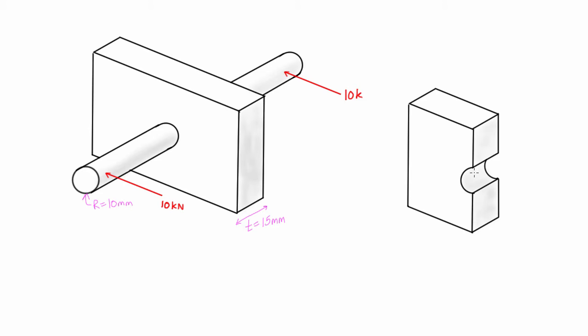So what we do in practice is we typically just assume that the entire force is being transmitted onto a rectangular projection of the rod onto the block. So in this case we would have 20 kilonewtons pressing on it, and the area of this block is 15 millimeters by 20 millimeters.